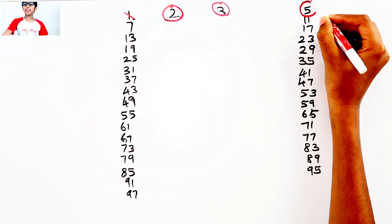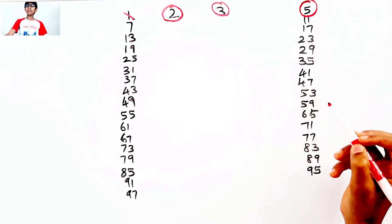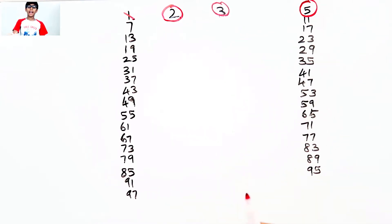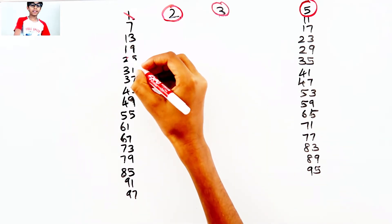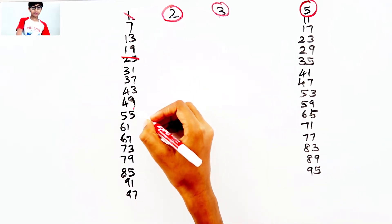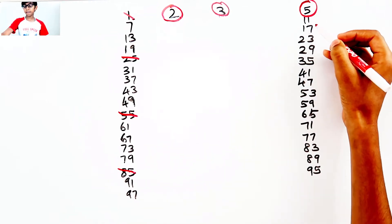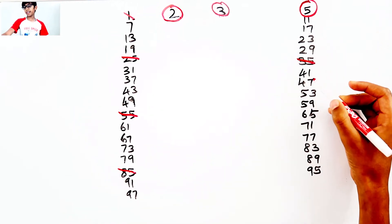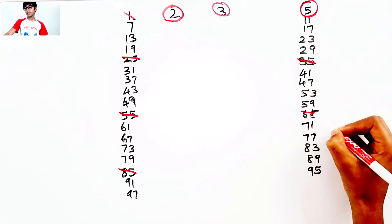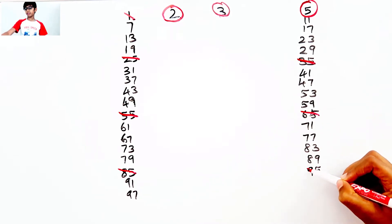The next prime number is 5. We only need to cross out any number that ends with 5. So 25, 55, 85, 35, 65, 95.